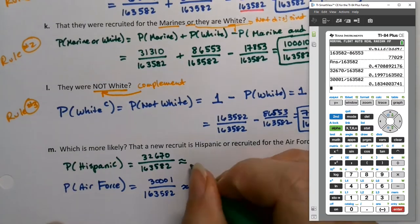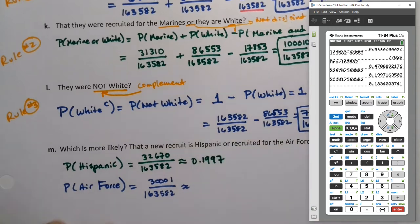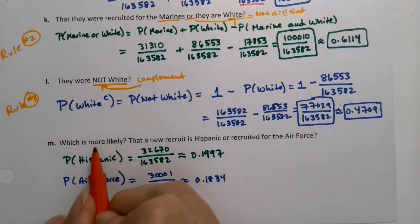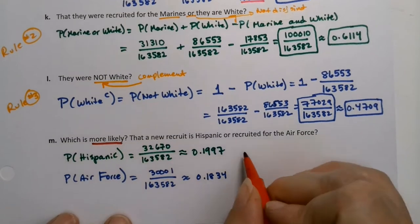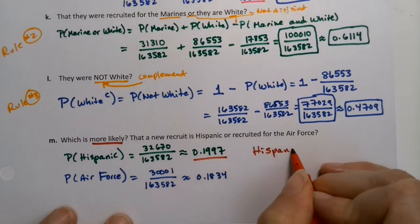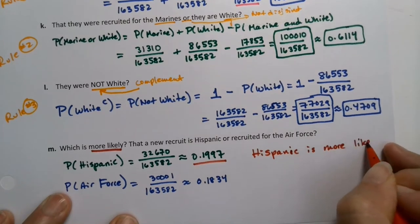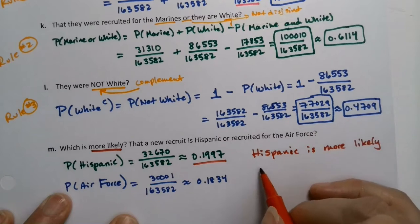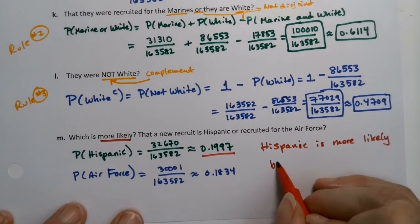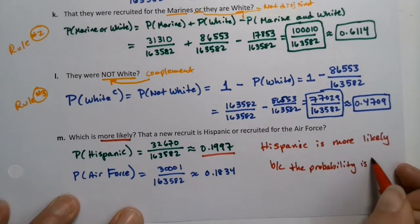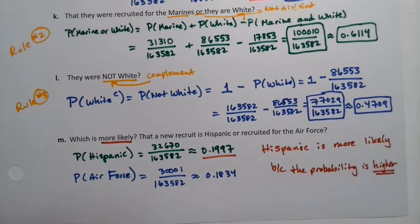So 32,670 divided by 163,582 versus 30,001 divided by 163,582. So sure enough, we find that the probability of Hispanic is 0.1997 and the probability of Air Force is 0.1834. Now we knew that because if you compare the numerators, you can see Hispanic is larger, but I want to get at the idea of more likely because this is what probabilities are useful for. So you can see Hispanic is more likely because it has a higher probability. And that's what's useful, right? That's what probabilities are useful for is showing us what's more likely. In other words, higher probability means more likely. They are one and the same.